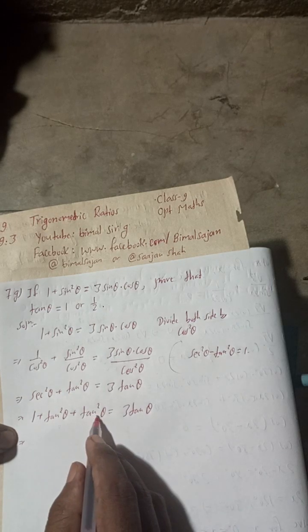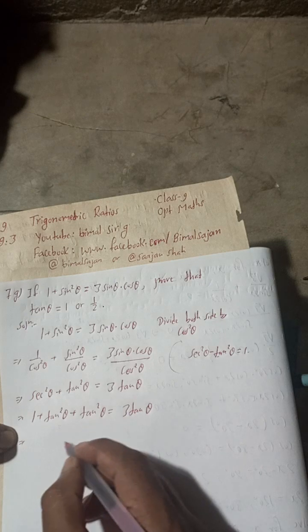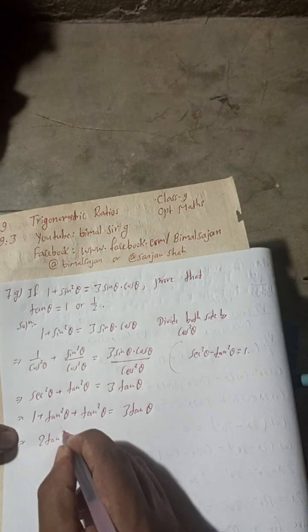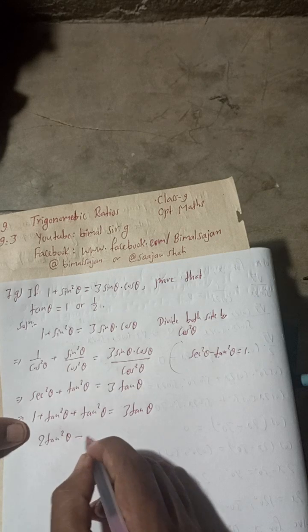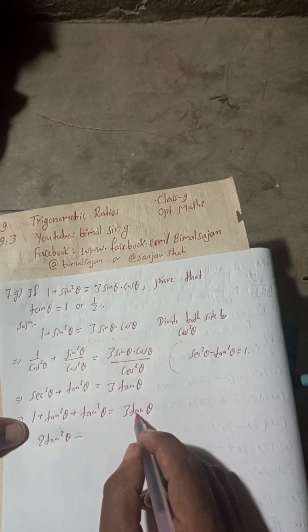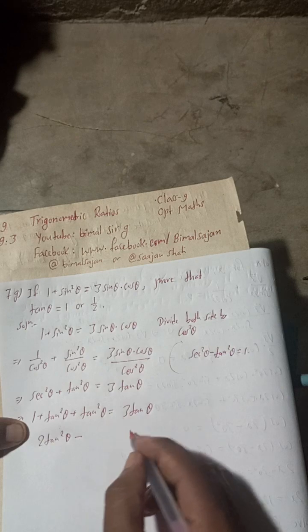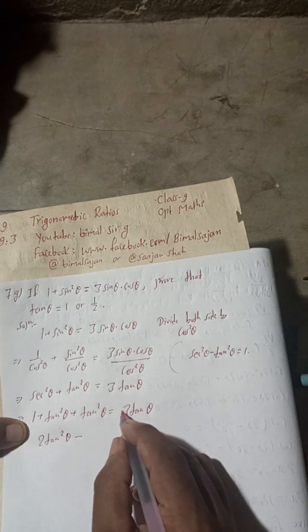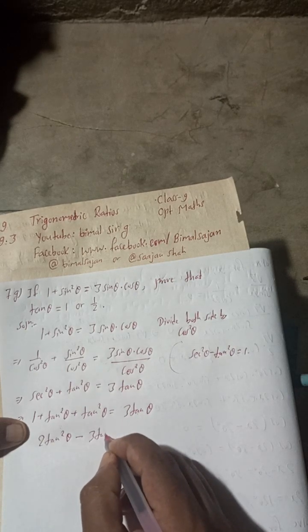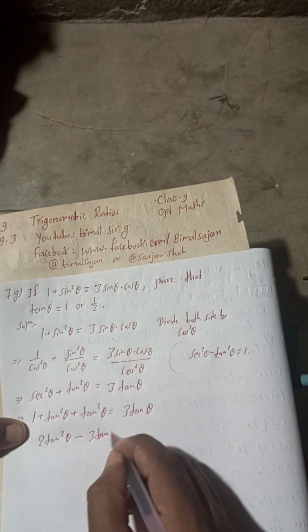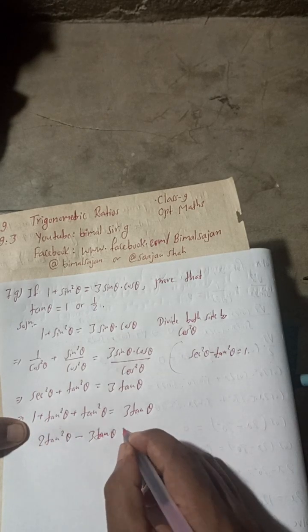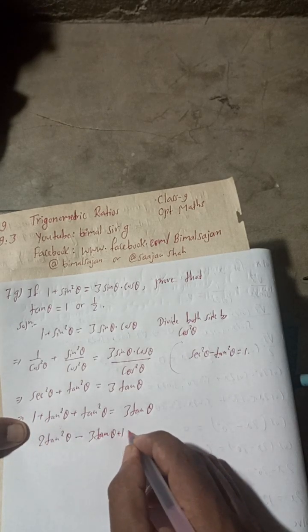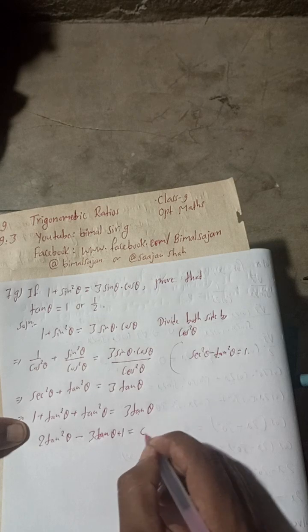Combining like terms: tan²θ plus tan²θ gives two tan²θ. So we have: 2tan²θ minus 3tanθ plus 1 is equal to zero.